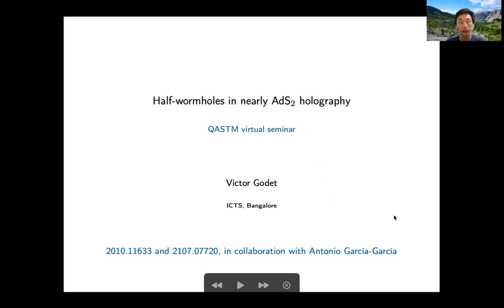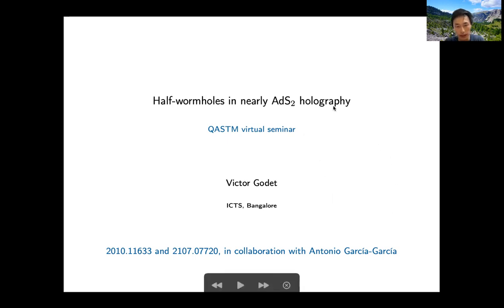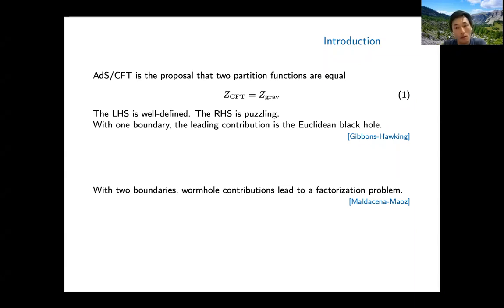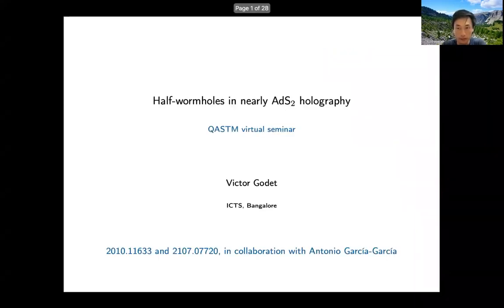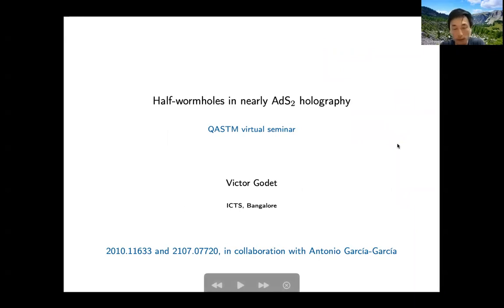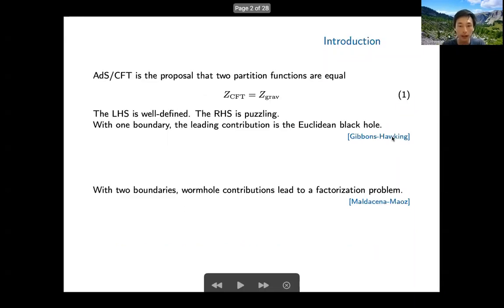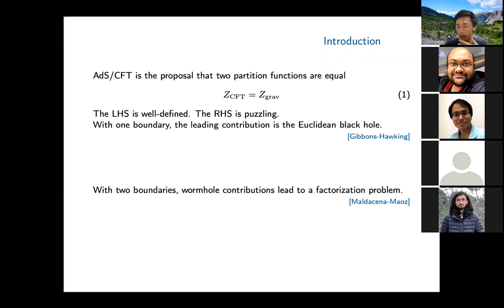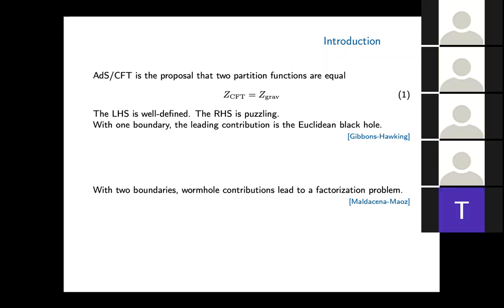This talk is about half-wormholes and the factorization problem, studied in the context of nearly AdS2 holography. Let me start by reviewing what AdS/CFT is. AdS/CFT is the proposal that the partition function of a CFT, Z_CFT, should be exactly equal to Z_grav, the partition function of quantum gravity or string theory. The left-hand side is well defined, but the right-hand side is very puzzling.